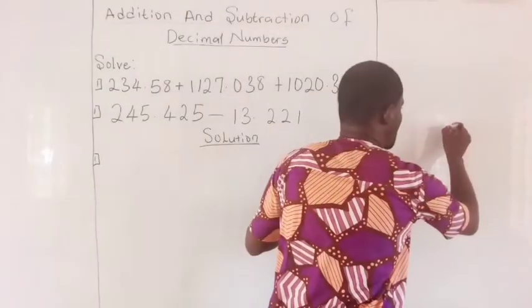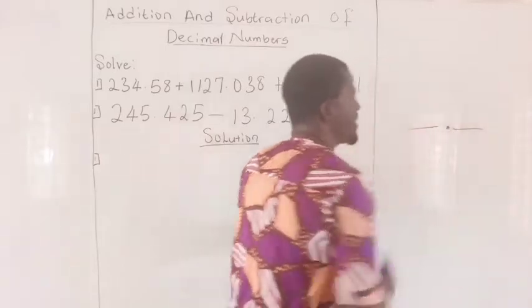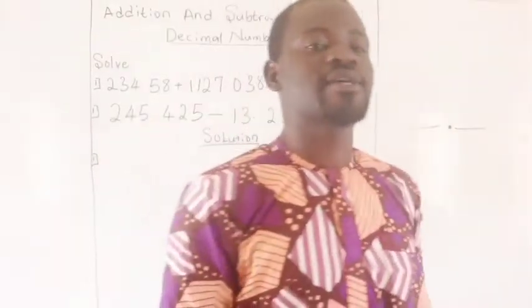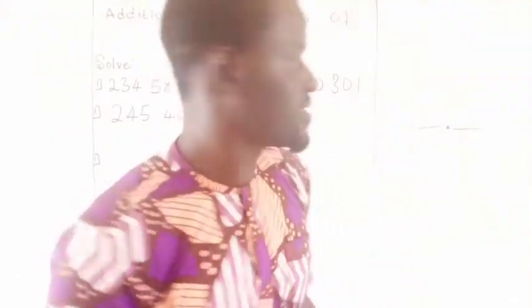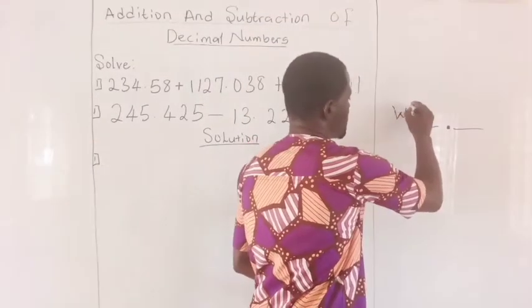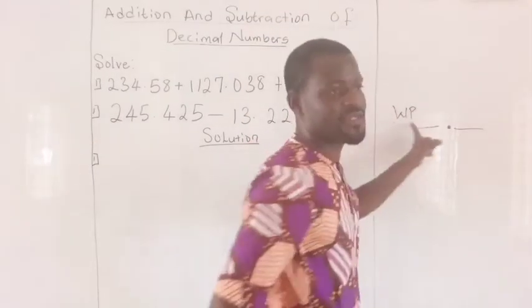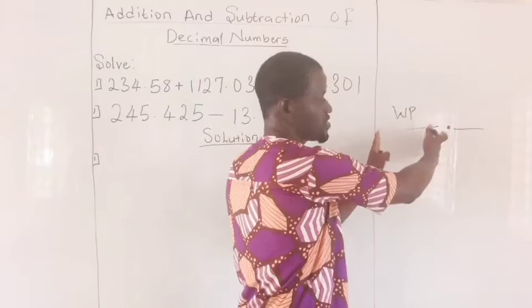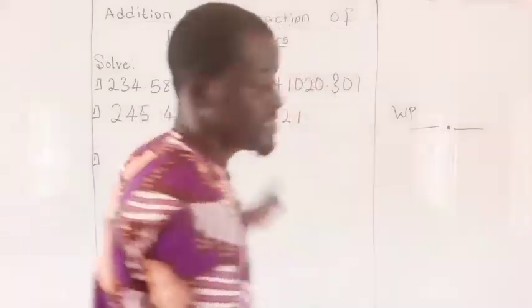Now, when we have the decimal number, decimal numbers always have three parts. We have the whole parts. This is the whole part. Any number on the left-hand side is the whole part.